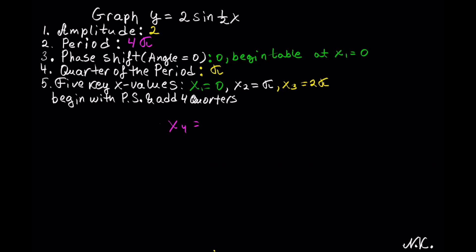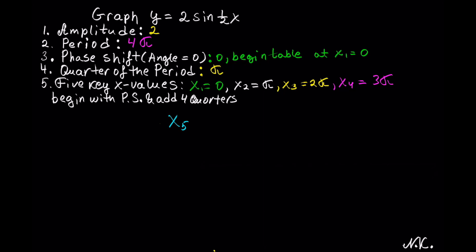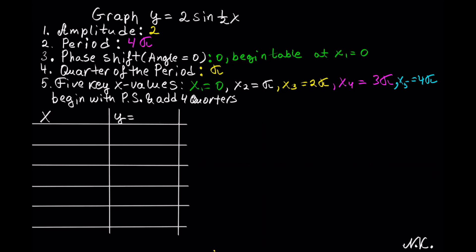The fourth x value is calculated by taking the third x value and adding the quarter of the period. So x4 equals 2 pi plus pi, which gives us 3 pi. Our last x value, the fifth one, is calculated by taking x4 and adding the quarter of the period: 3 pi plus pi gives us x5 equal to 4 pi. So our five x values are: 0, pi, 2 pi, 3 pi, and 4 pi.